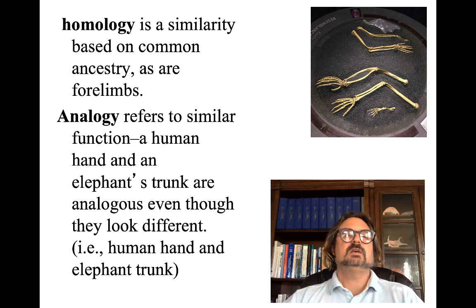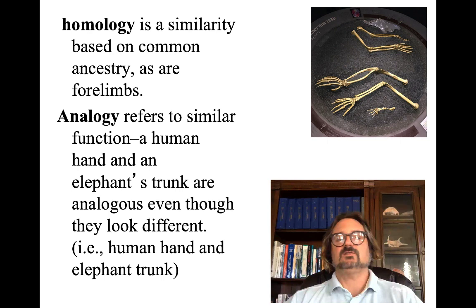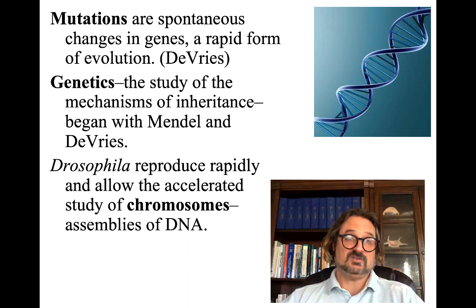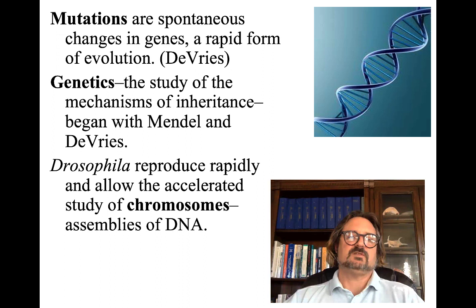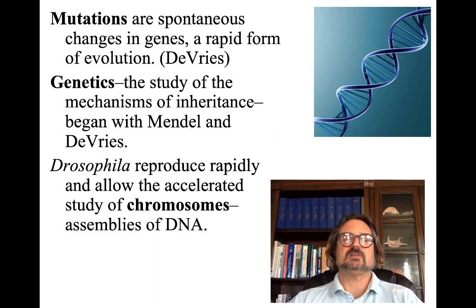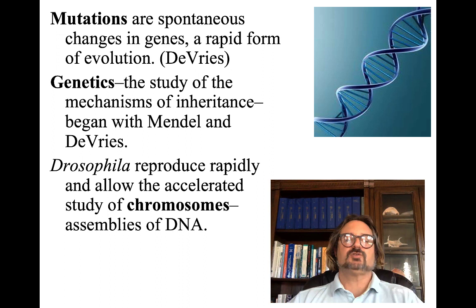Homology is similarity based on common ancestry, as with forelimbs. Analogy refers to similar function, such as a human hand or an elephant's trunk, which are analogous even though they look different. Mutations are spontaneous changes in genes — a rapid form of evolution discovered by DeVries. Genetics is the study of mechanisms of inheritance, beginning with Mendel and DeVries. We often use the Drosophila fly to study genetics because it reproduces very rapidly and has large chromosomes available in the salivary glands, making it easy to study.